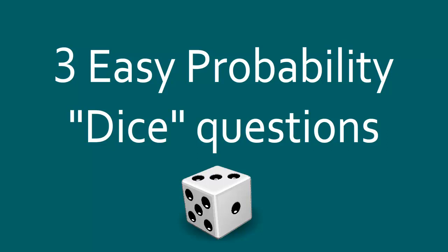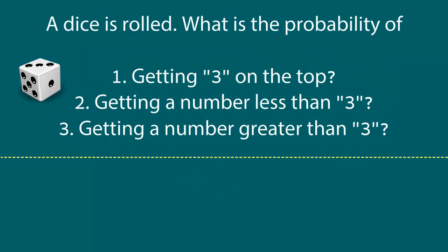Let's take a look at three easy probability questions involving a dice. We roll a dice and want to calculate: first, the probability of getting the number 3 on top; second, the probability of getting a number which is less than 3 on top; and finally, the probability of getting a number which is greater than 3.